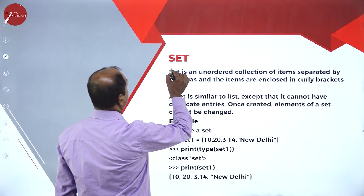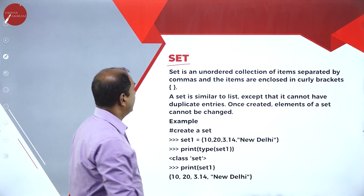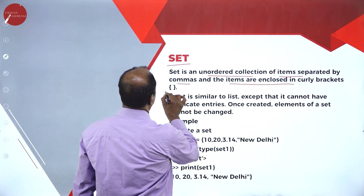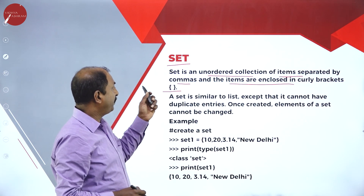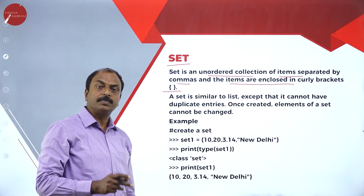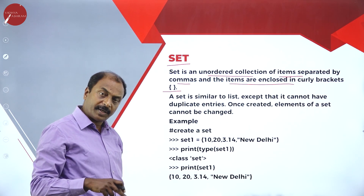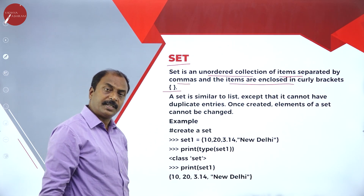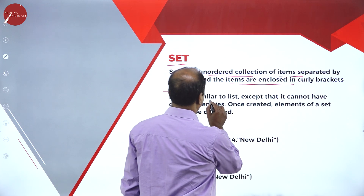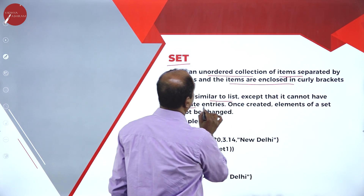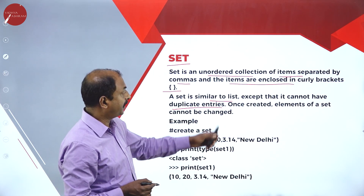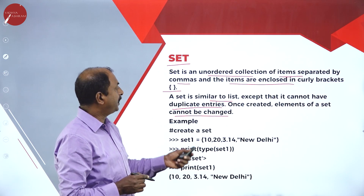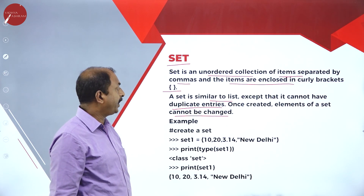In the next slide we will see another data type — set. What is a set? Set is an unordered collection of items separated by commas and the items are enclosed in curly brackets. Comparing with the previous two data types: tuple is enclosed in small brackets, list is enclosed in square brackets, and set items are enclosed in flower brackets or curly brackets. Set is similar to list except that it cannot have duplicate entries, and once created, elements of a set cannot be changed.